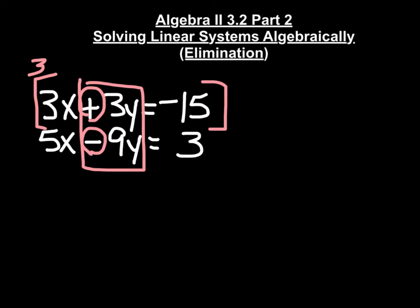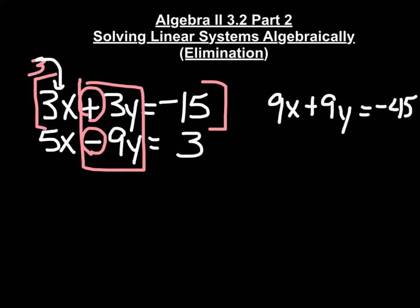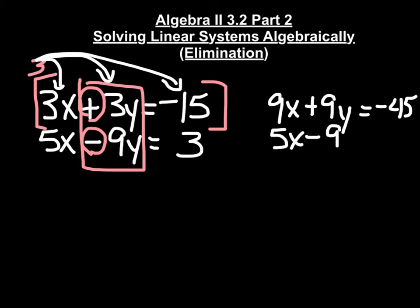We're going to distribute that 3, and we're going to get 9x plus 9y equals negative 45. We took that 3 and distributed it to every single term in the first equation. Now let's rewrite the second equation just like it was: 5x minus 9y equals 3.